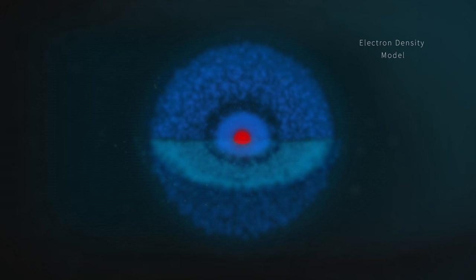So the electron density model is our most realistic image of what an atom looks like. It's just harder to draw on a blackboard.